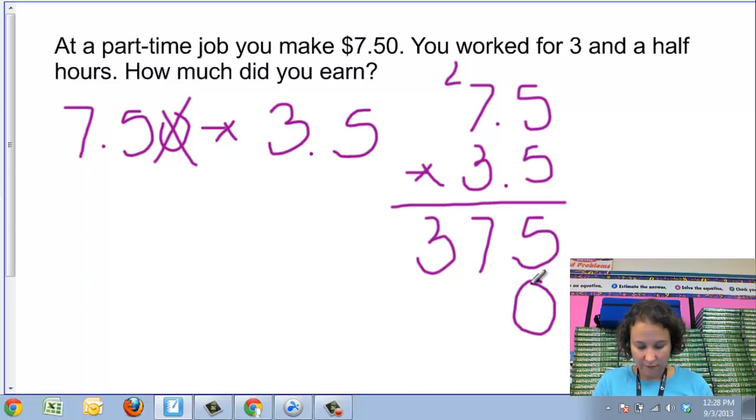I'm going to do the top 5 times the bottom 3, which will give me 15. I'm going to carry the 1 from 15. I'm going to multiply 7 times 3, the top 7 by the bottom 3, giving 21. And add that additional 1, which would give me 22.